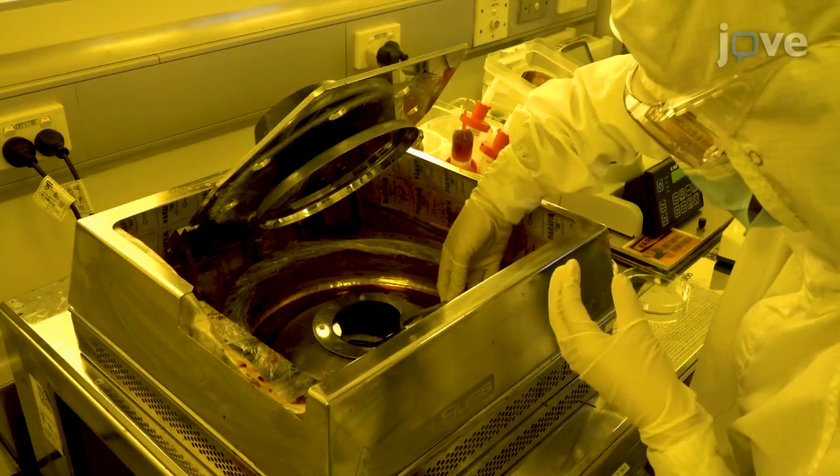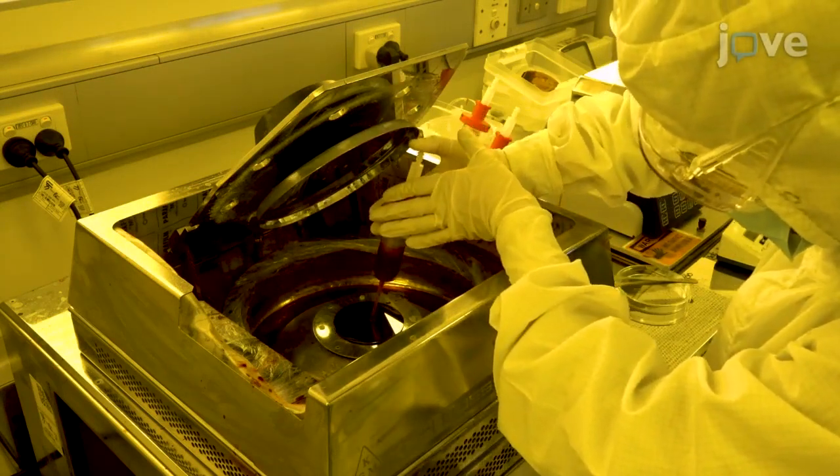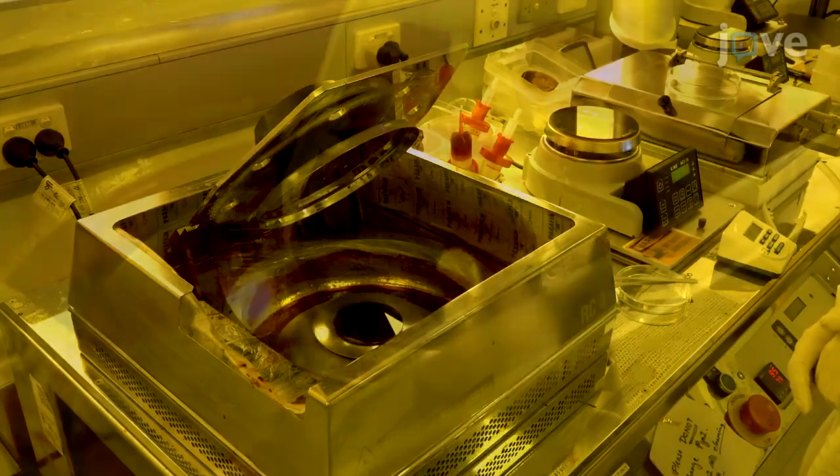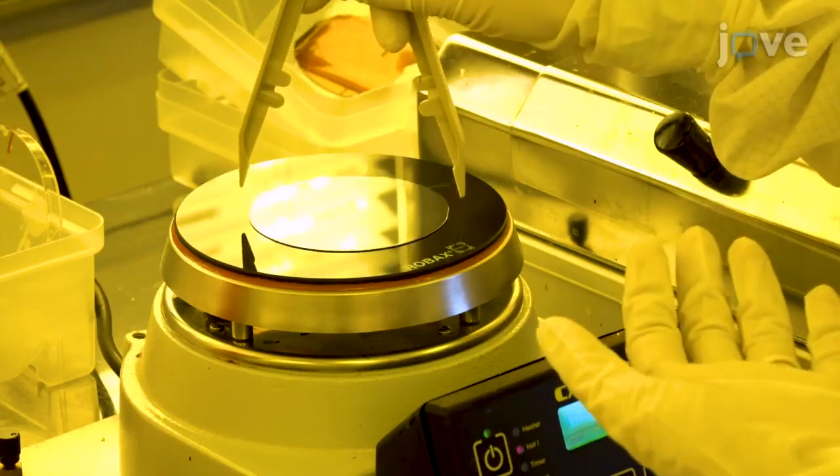To pattern the bottom electrode of the cross-point device with photoresist, first spin coat the photoresist onto the wafer at 3000 revolutions per minute before soft baking at 95 degrees Celsius for 60 seconds.